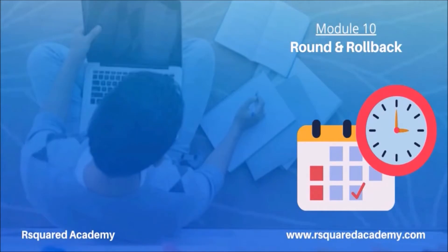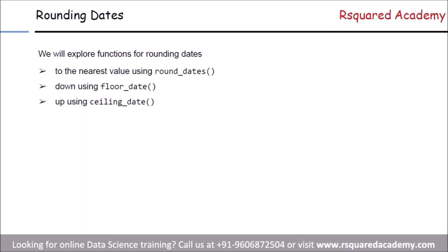In this last module we'll learn how to round date and time to the nearest unit and also to rollback dates. We'll begin with rounding dates and explore functions for rounding dates to the nearest value using round_date function, and then we'll learn how to round down using floor_date and round up the dates and time using ceiling_date.